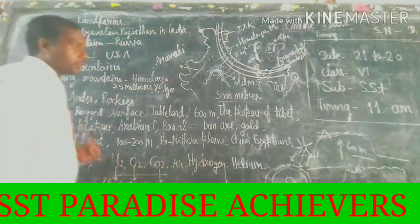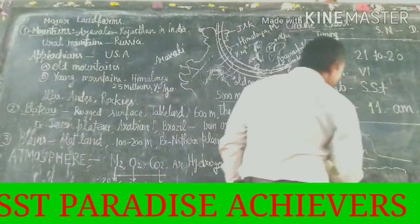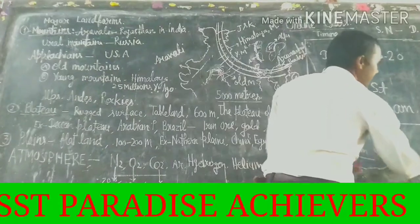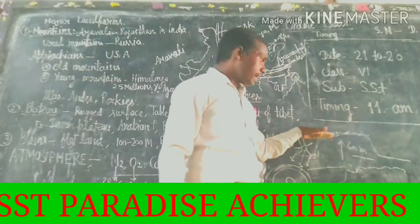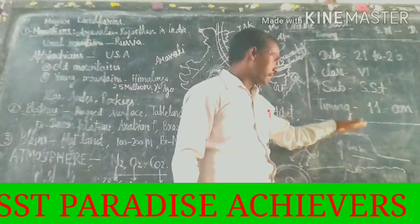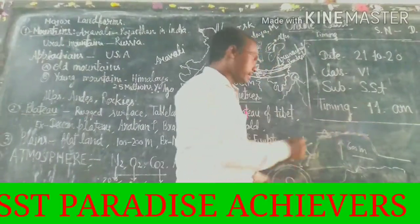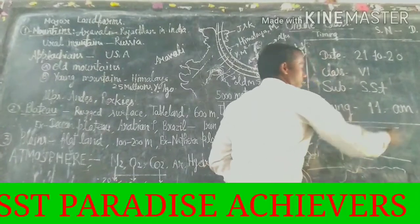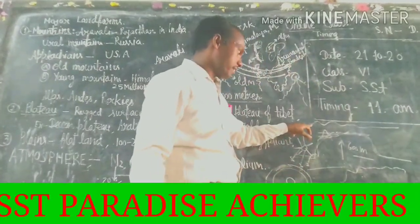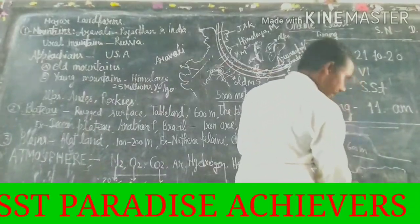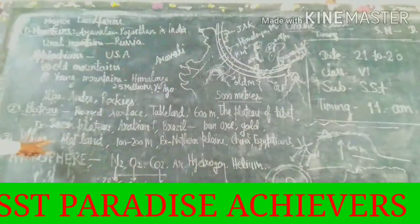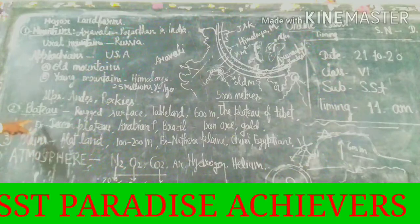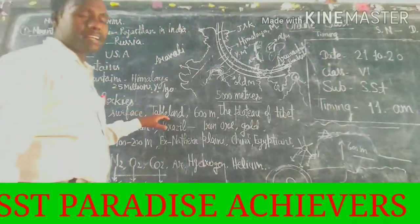Plateaus. What are plateaus? Plateaus are an elevated area of the earth, but they do not have sharpness. They have a rugged surface. This is a rugged surface, and this is a plain surface. The plateau has a rugged surface. It is just like a tableland.